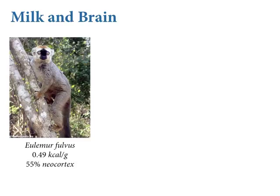Let's look at a dataset in the rethinking package about the composition of primate milk and brain size — particularly neocortex size, which is the part of the brain that primates are proud of. It's the part biggest in humans, and the part we think matters. Marsupials and birds have different opinions about which part of the brain is important. But from our egocentric primate view, the neocortex is the wrinkly part we like, so we measure it.